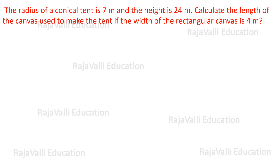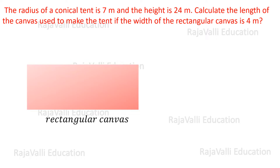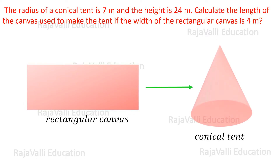Hello friends, welcome to Roger Valley Education Channel. Here we are going to see one of the questions from surface areas and volumes. The radius of a conical tent is 7 meters and the height is 24 meters. Calculate the length of canvas used to make the tent if the width of the rectangular canvas is 4 meters. In this question, the rectangular canvas is converted into a conical tent.